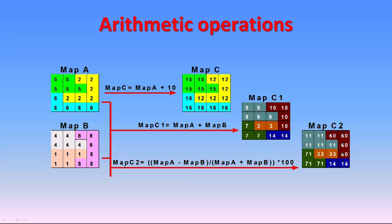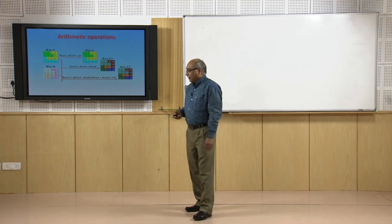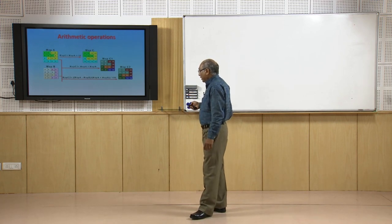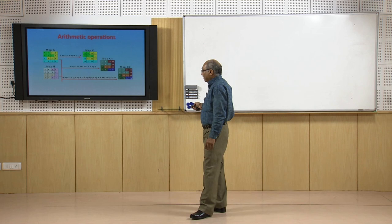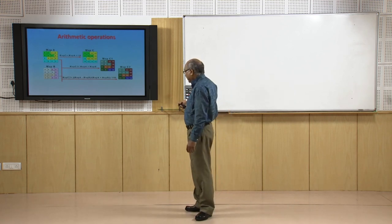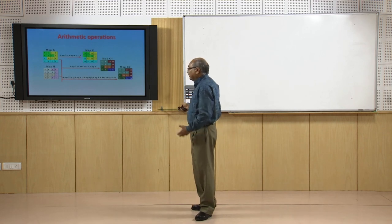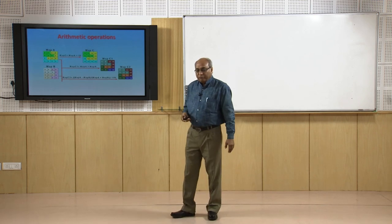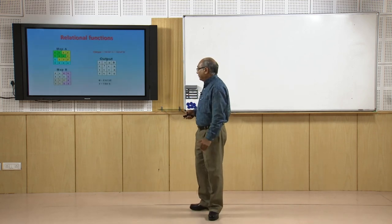A more complex example: map C equals map A minus map B, divided by map A and B multiplied by 100 - this is like creating an index. When you put a complicated syntax, you must check at least a few randomly selected locations to verify correct results. Otherwise, if you use that map as input for further analysis carrying wrong results, you will end up with really confusing outputs. The best approach is to go step by step.